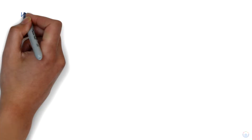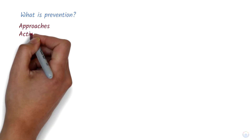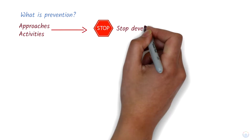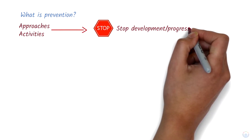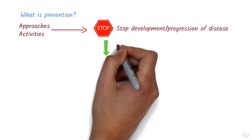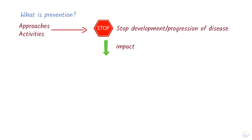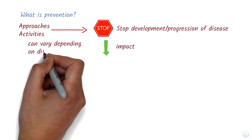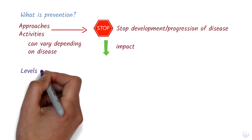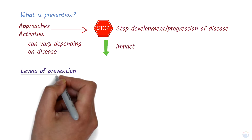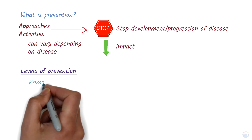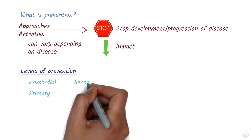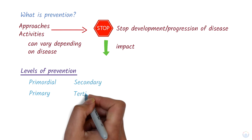What is prevention? Prevention describes approaches or activities that stop the development or progression of a disease or its impact. While prevention activities can vary depending on the type of disease, they can be broadly classified into four levels: primordial, primary, secondary, and tertiary.